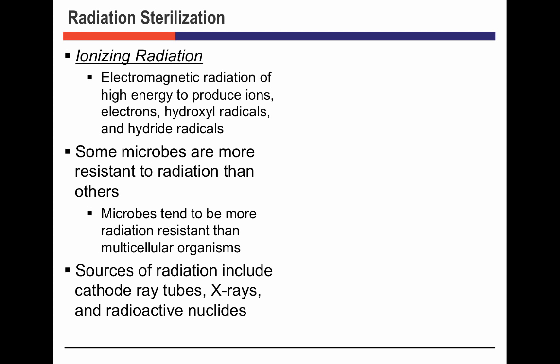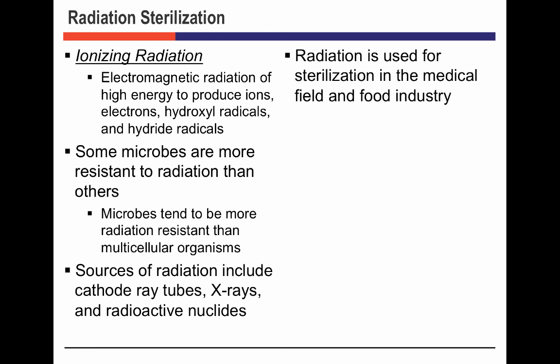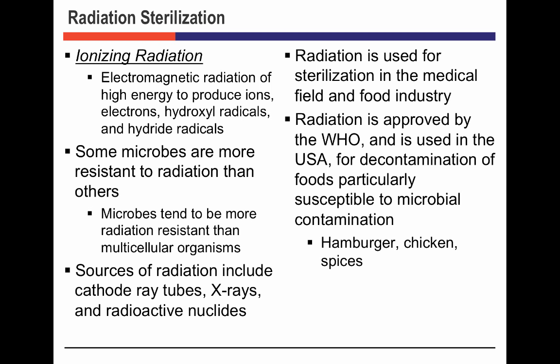Depending on the amount of radiation, some organisms are more susceptible than others. We can get radiation from X-ray tubes, radionuclides, and other sources, and it is constantly used in both the medical and food industry. The World Health Organization has guidelines used in the U.S. to sterilize hamburger, chicken meat, and spices with radiation to reduce the number of organisms.